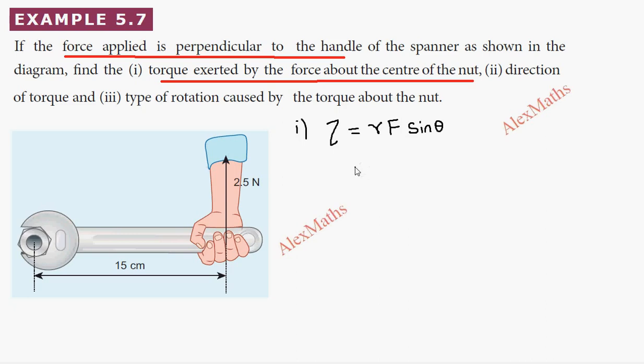r is the perpendicular distance, so 15 centimeters equals 15 times 10 to the power minus 2 meters. Force is 25 newtons and the angle is 90 degrees, since the forces are perpendicular.